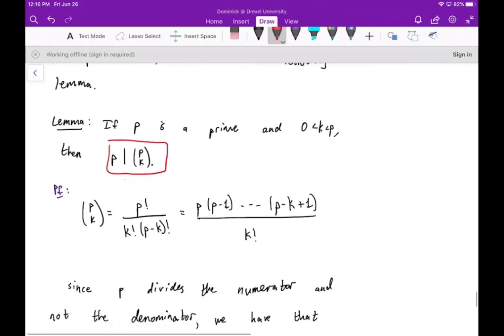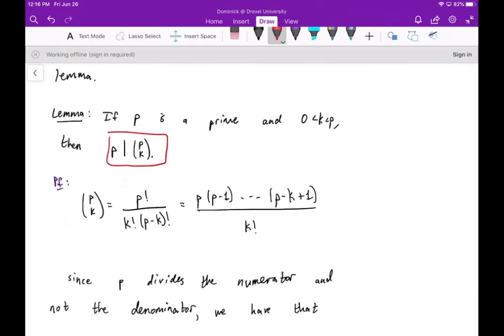We get that P divides P choose K. The proof of this isn't that bad. First, you just write out the formula for P choose K, which is P factorial over K factorial times P minus K factorial.